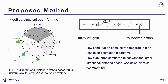Along with the proposed sounding framework, a modified classical beamforming is also proposed to support the signal processing procedure. A window function is introduced when calculating the array weights. By properly selecting the size of the window arrays and window functions, high angular resolution and low side lobes can be achieved.